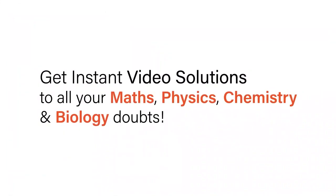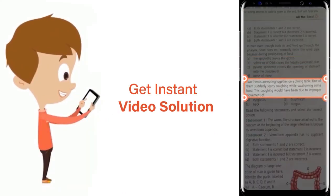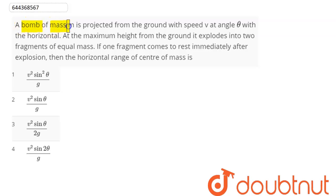With Doubtnet, get instant video solutions to all your maths, physics, chemistry, and biology doubts. Just click the image of the question, crop the question, and get instant video solution. Download Doubtnet app today. Question is: a bomb of mass m is projected from the ground with speed v at angle theta with the horizontal.